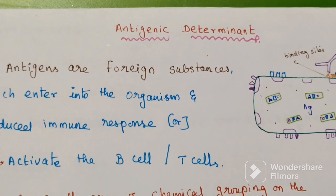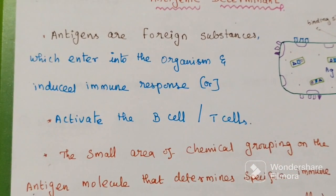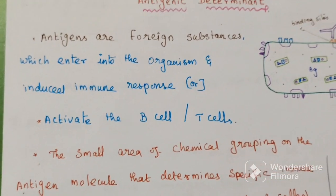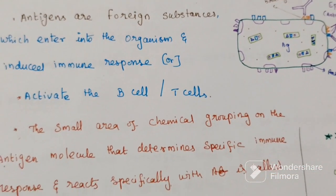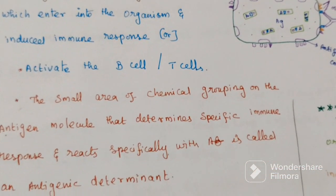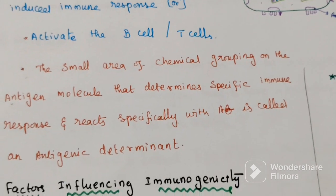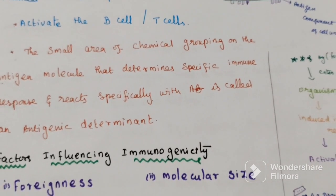So, these are the fourteen different factors influencing immunogenicity.